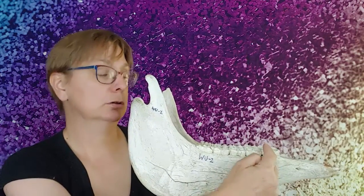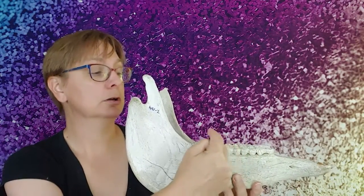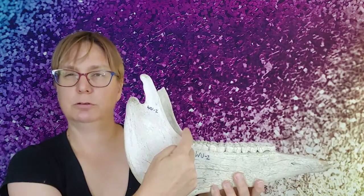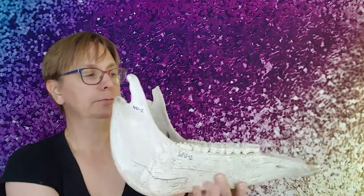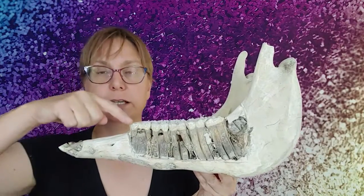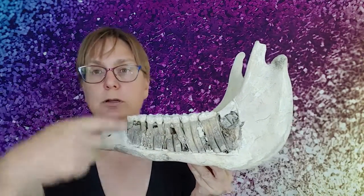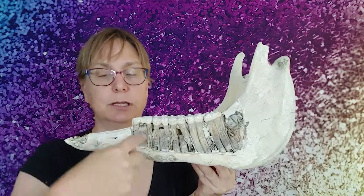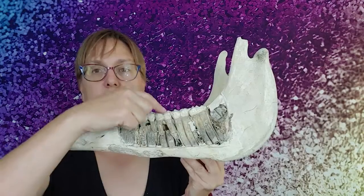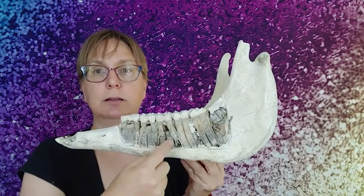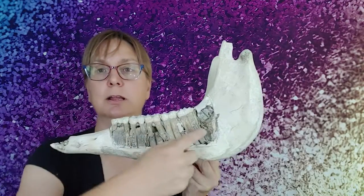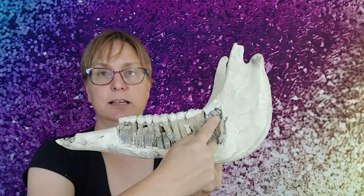This is the premolar, premolar, premolar, molar one, molar two, molar three. Here's the same jaw cut apart. And here we can see, this is a baby tooth, that's a baby premolar and the permanent tooth coming in, baby premolar, permanent tooth coming in, baby tooth, permanent tooth right here. And here is the permanent first molar, permanent second molar, and this is our third molar.